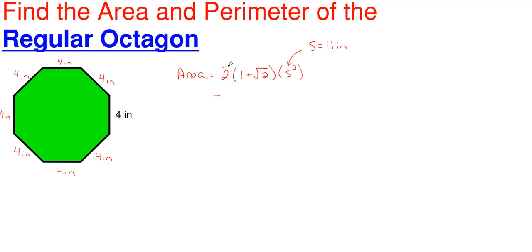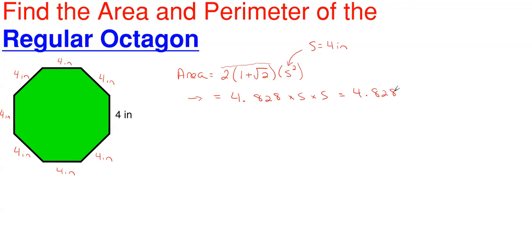My area — since this portion right here is constant, it will never change based upon whatever your side is — 2 times (1 plus the square root of 2) will always be 4.828. And then the second part will just be times s times s. So this is the area equation you will use: it will always be for a regular octagon 4.828 times your side times your side. Filling this in, we have 4.828 times 4 inches times 4 inches.